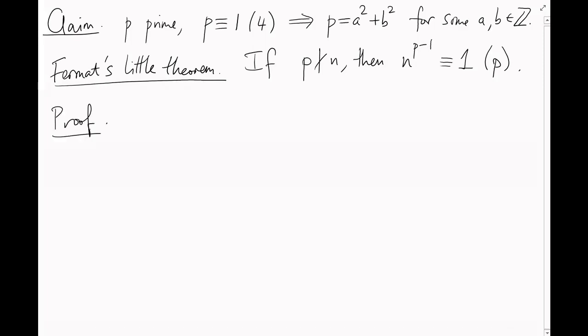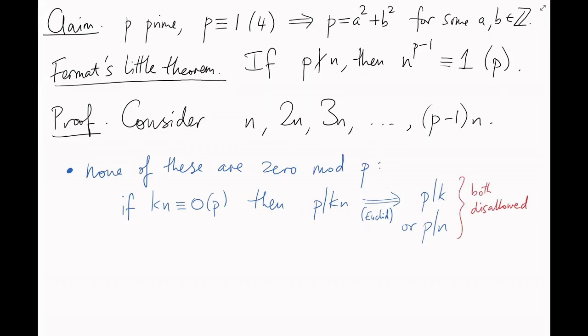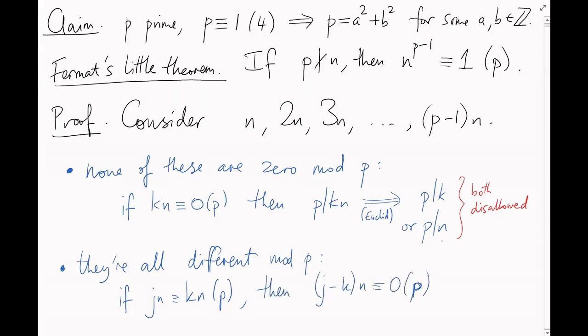Here's a quick proof. Consider the numbers n, 2n, 3n, up to (p-1)n. None of these are 0 mod p. If one of them was, say kn equals 0 mod p, where k is between 1 and p minus 1, that means that p would have to divide kn, and therefore that p would have to divide either k or n by Euclid's lemma. But it doesn't. So, none of these are 0 mod p, and by a similar argument, they're all different mod p. If, say, jn equals kn mod p, where j and k are between 1 and p minus 1, then (j-k) times n is 0 mod p, which, by the same argument, says that j must equal k.